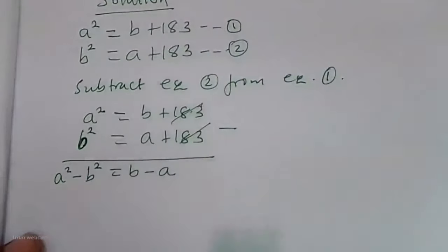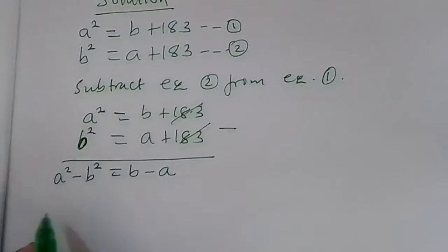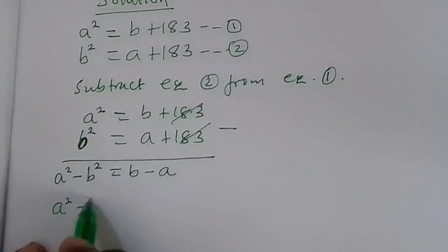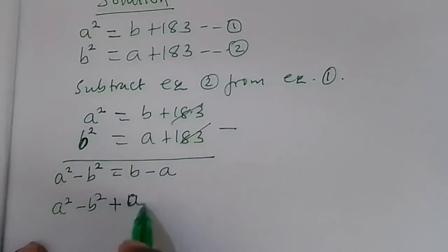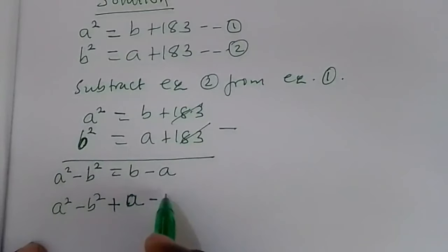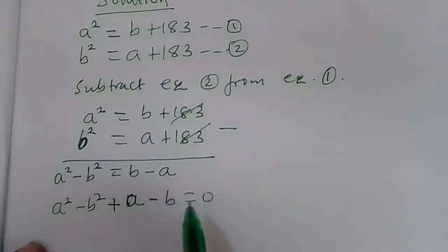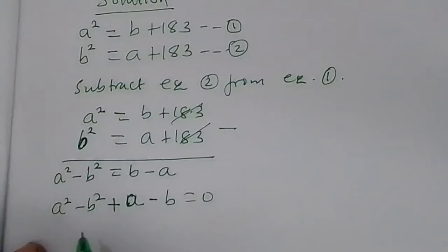Bringing everything to one side of the equation, we have a squared minus p squared plus a minus p equals zero.